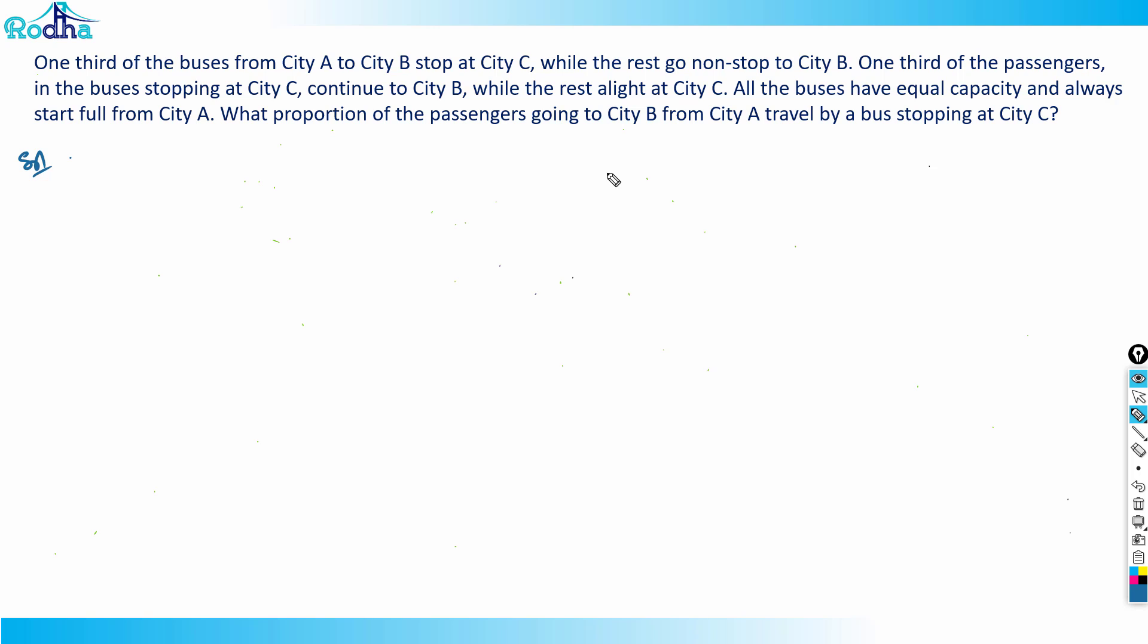One third of the passengers in the buses stopping at City C continue to City B, while the rest alight at City C. All the buses have equal capacity and always start full from City A.